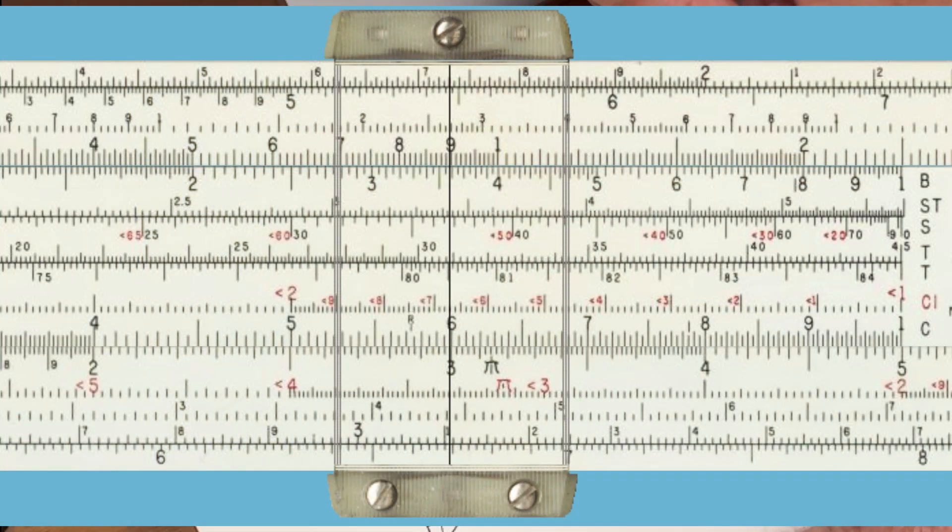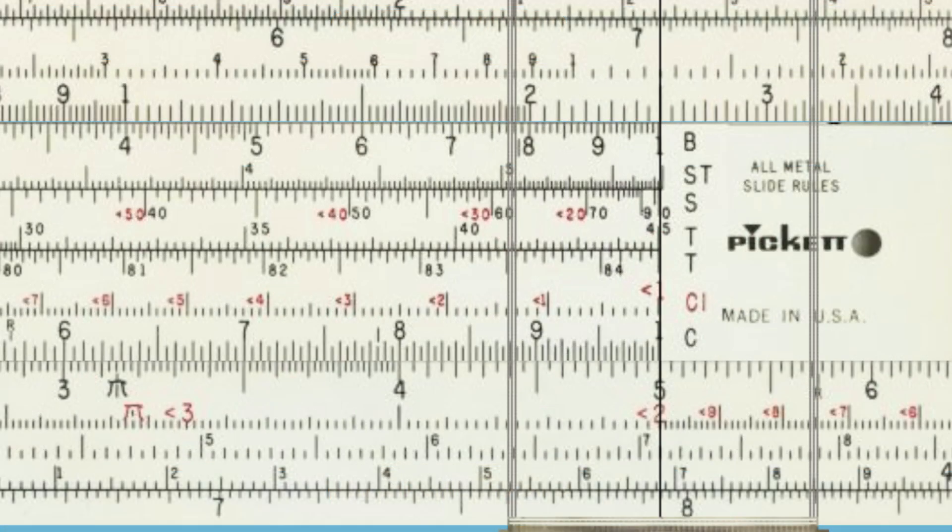Now that we know this angle, we can set the sine of 36.9 directly above its corresponding side, which is 3. Let's go ahead and do that. We'll look on the sine scale, and we'll come to 36.9. And as you see, we're set up directly over the number 3 on the D scale. So we have the sine of angle B directly over the length of side B. Then we simply come out to the sine of 90 degrees, which is 1, and read straight down to the length of the hypotenuse, which is 5.